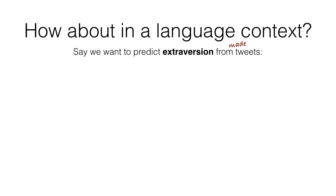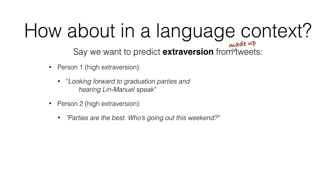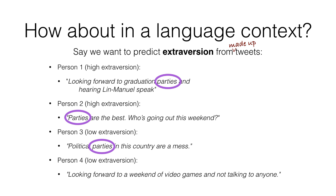Say we have four people who tweeted the following — these are all made up. Person one scored high on the extraversion trait and said, 'looking forward to graduation parties and hearing Lin-Manuel speak.' Person two also scored high on extraversion and says, 'parties are the best, who's going out this weekend?' Person three scored low on extraversion and says, 'political parties in this country are a mess.' Person four also scored low on extraversion and says, 'looking forward to a weekend of video games and not talking to anyone.' Based on the correlation results we saw in the PLOS ONE paper and common sense, we might expect usage of the word 'parties' to be a feature that predicts high extraversion. But notice that while both highly extroverted people used the word, so did one of the low extroversion people. In other words, it's not a specific indicator of high extroversion.